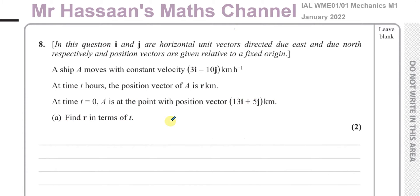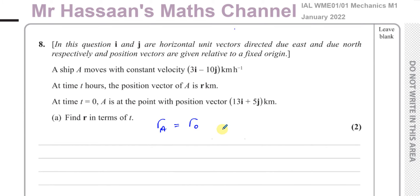Find R in terms of T. Basically, what we want to find here is the position vector of ship A, and that's going to be the position vector of the ship A initially plus its velocity vector times the time.